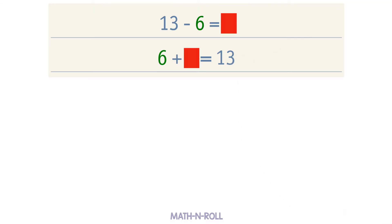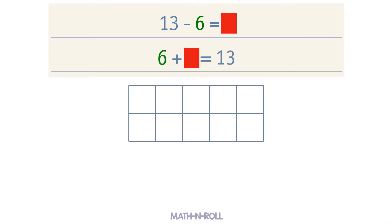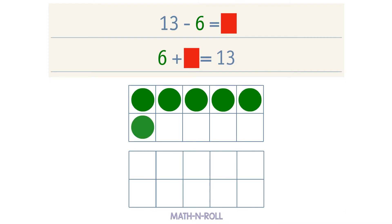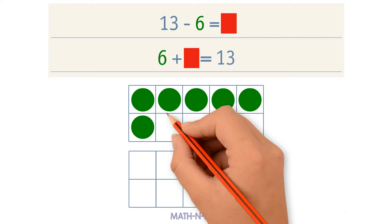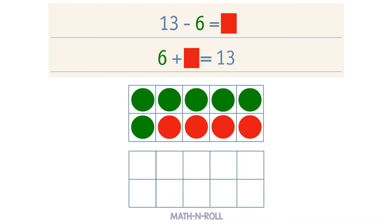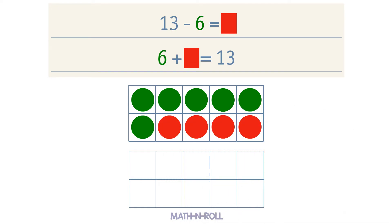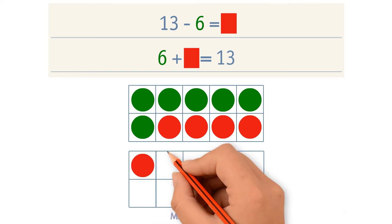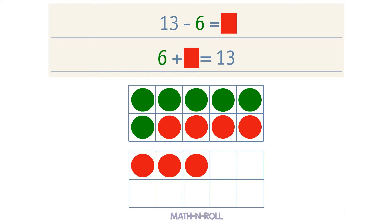Use the make a 10 strategy to solve. Take a look at the model. We have 6 circles. Make a 10 by adding 4 red circles. To get to 13, we add 3 more red circles. 4 plus 3 equals 7, so 6 plus 7 equals 13. 7 is our unknown number. 13 minus 6 equals 7.